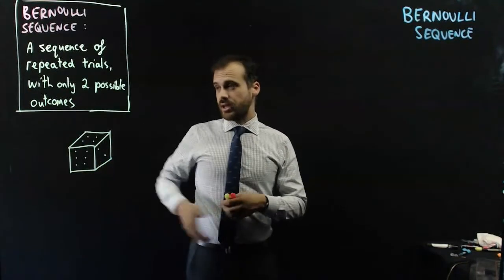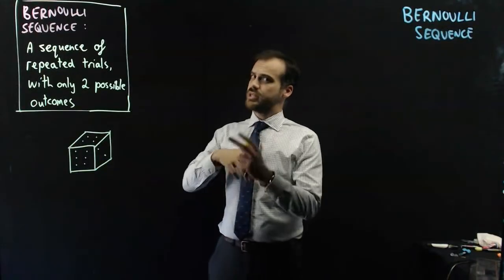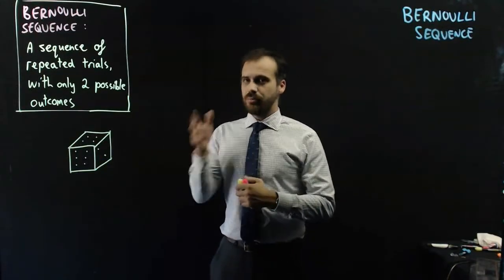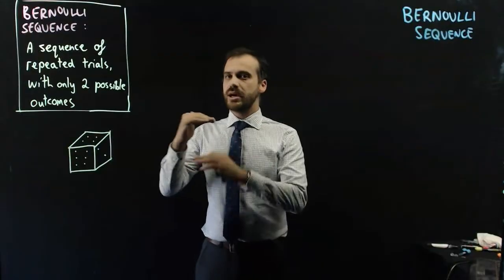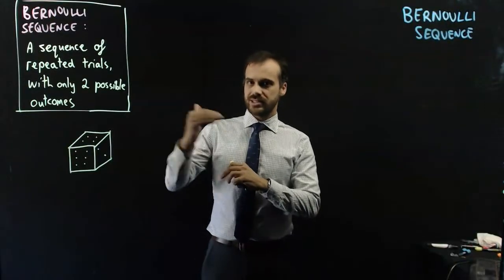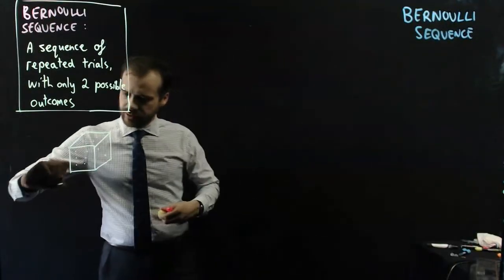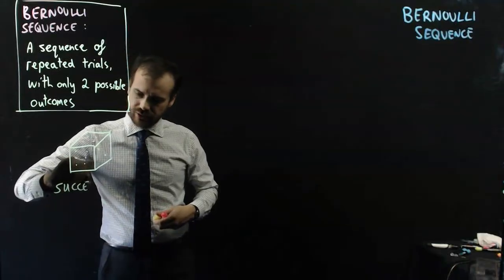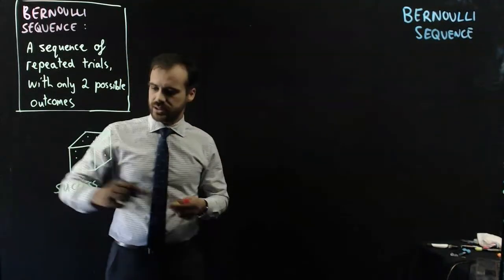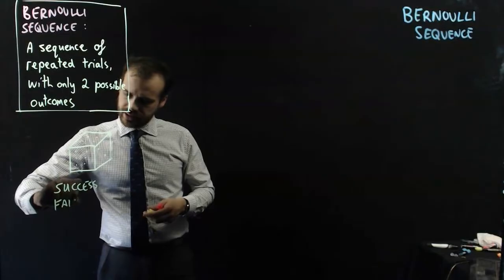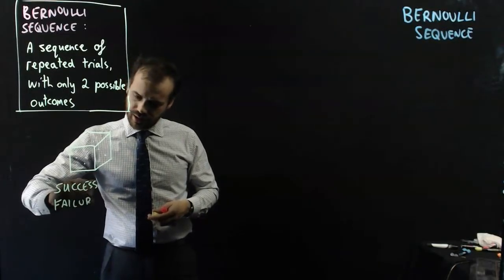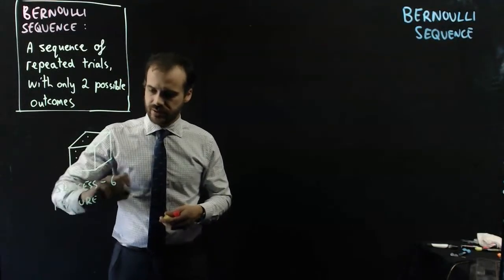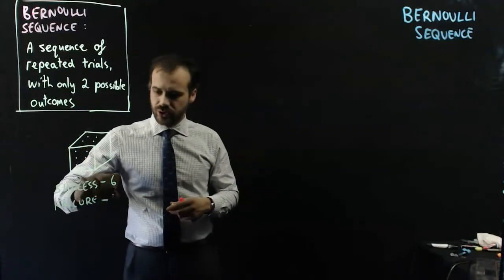So I'm going to roll this dice. Now, you might say, wait a minute, a dice has six outcomes. But we're going to think about our outcomes in terms of success and failure. And we're going to talk about success and failure a lot when it comes to Bernoulli sequences. A success is rolling a six. And a failure is not a six.